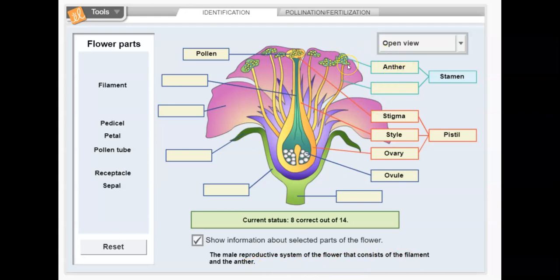Well, we already labeled the anther. That's this part up here, not the little yellow dots, the little yellow dots are pollen. And it also says it consists of the filament and the anther. So let me go grab filament. That must go there. And indeed this part here is the filament. It's the stalk that supports the anther. And let's fill in some more stuff.